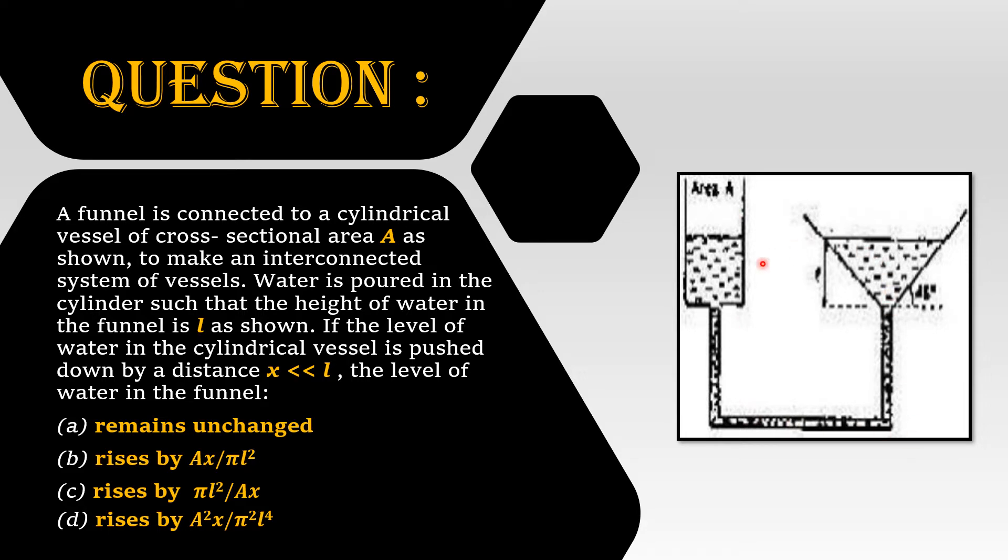Water is poured in the cylinder such that the height of water in the funnel is L as shown. If the level of water in the cylindrical vessel is pushed down by a distance x which is much less than L,